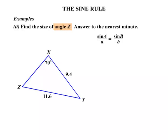So we're after angle Z. There's our angle. It's matching with the 9.4. And the 70 degrees matches with the 11.6. So there's our first match. Sine Z over 9.4. We've written that. And then the other match. So it equals sine of 70 degrees over 11.6.